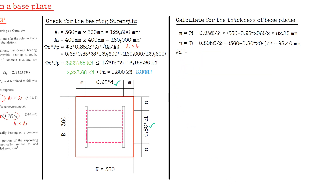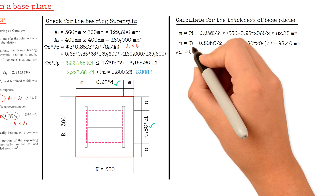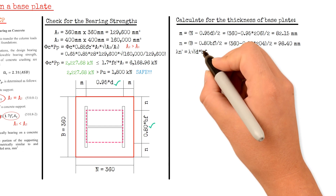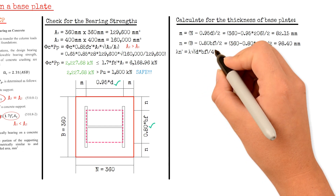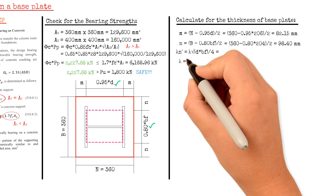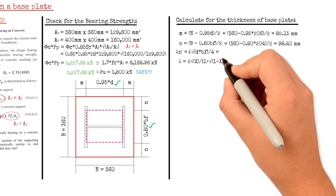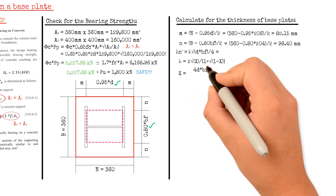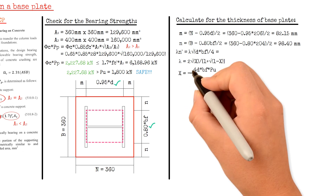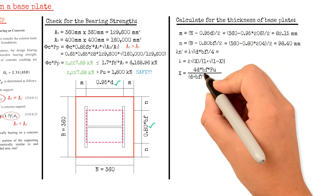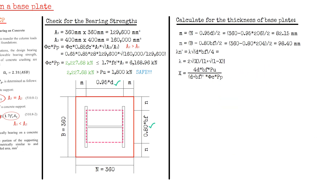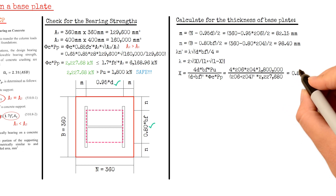We will also calculate the auxiliary variable gamma times the yield line theory cantilever distance N'. This equals gamma × √(depth × width) / 4. The auxiliary variable gamma equals 2√x / (1 + √(1 − x)), where x equals 4 × depth × width × actual axial load, divided by (depth + width)² × phi × P_P. Substituting all values, x equals 0.81, which is less than or equal to 1.